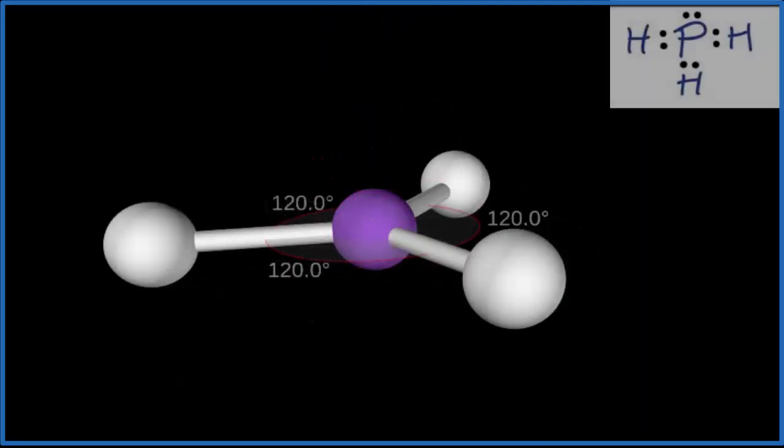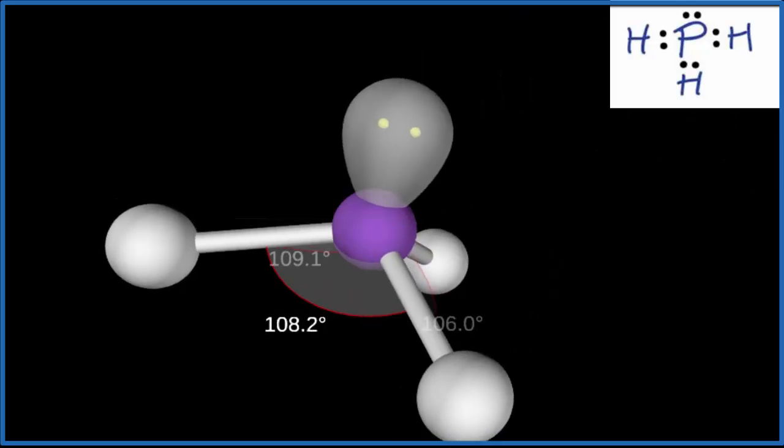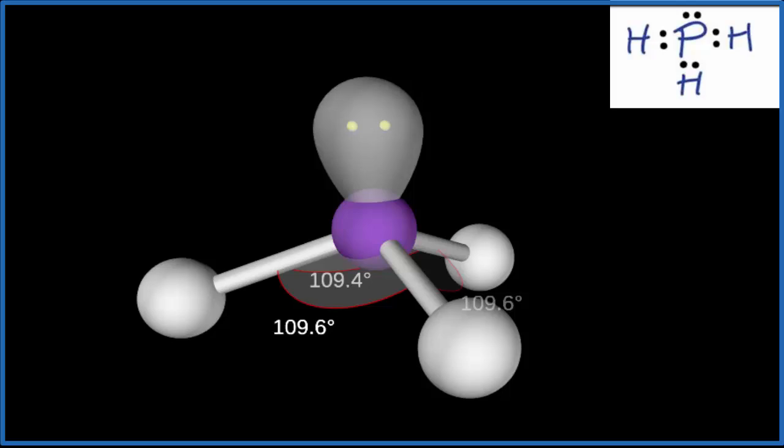When we add that last lone pair that's on top of the phosphorus there, watch how that pushes everything down. So now we have our trigonal pyramidal molecular geometry. See the bond angle is 109.5 degrees. This is a general number. With this lone pair up here, I would expect it would push these down more, so this 109.5 would be a little bit less.